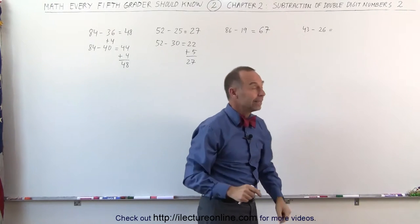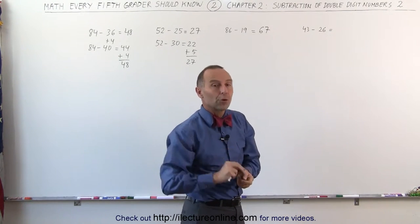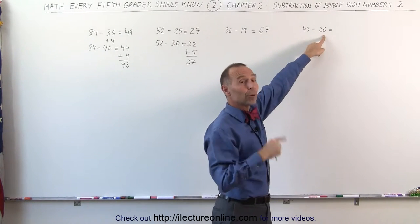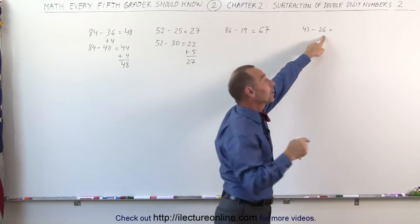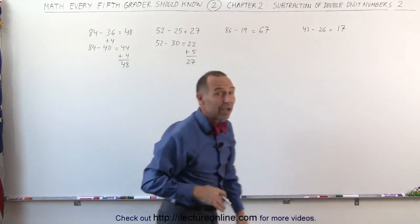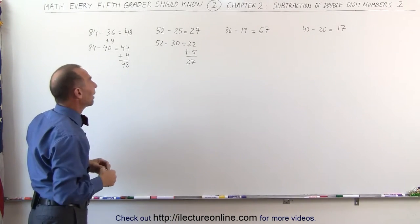Let's do this again over here. Instead of subtracting 26, I'm going to subtract 30. 43 minus 30, that gives me 13. But I subtracted 4 more than I should. 13 plus 4 gives me 17, and that's the answer. And that's how I subtract numbers like that. It makes it just a whole lot easier, and it's easier for the brain to do that.